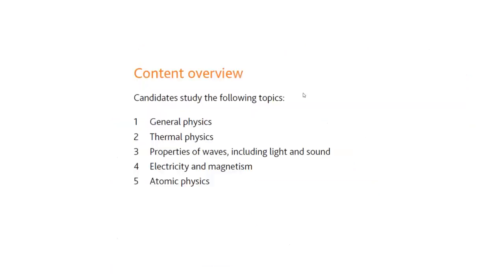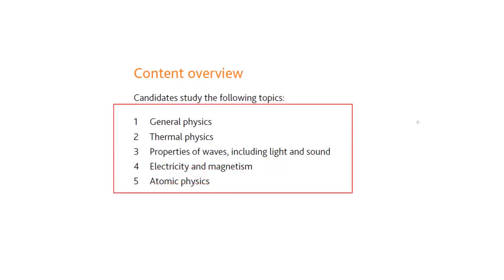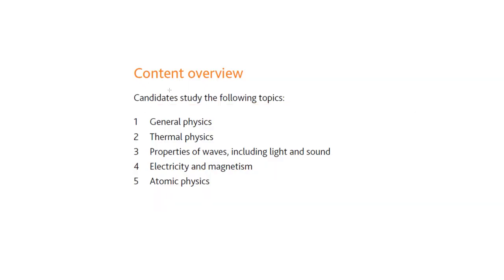Now the syllabus. There are five main topics — these are not chapters, each topic has multiple chapters. The five main topics are: General Physics, Thermal Physics, Properties of Waves including Light and Sound, Electricity and Magnetism, and Atomic Physics. Generally, General Physics has 8 chapters, Thermal Physics 3, Light and Sound 4, Electricity and Magnetism 6, and Atomic Physics 2 chapters.